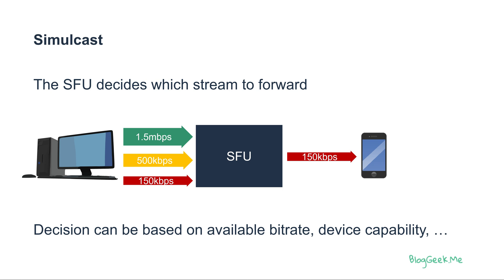How the decision is made by the SFU depends on your implementation. It can be based on the available bitrate on the sender and the receiver, on the device capabilities, on the network quality at the moment, the layout on the screen, what is being shown, the priorities, and a lot of other parameters related to your application.